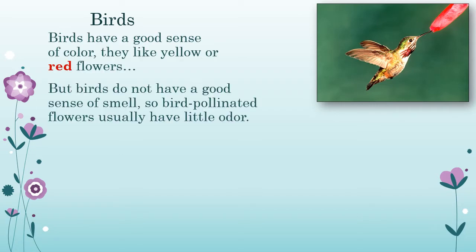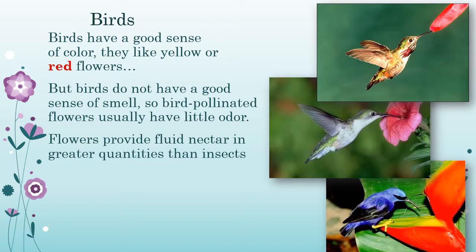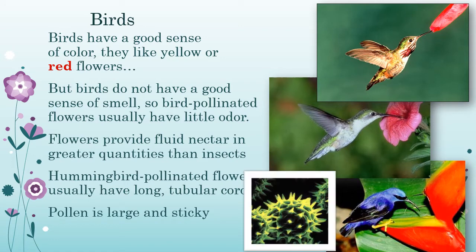Bird pollinators like hummingbirds and honeyeaters don't have a good sense of smell but love the color red, so the flowers tend not to have an odor but do tend to be red with lots of nectar. You often get trumpet-shaped flowers or little tubes where they stick their long beak in and their long tongue laps up the nectar — usually long fused petals forming a tubular corolla. The pollen is large and sticky, with little spikes visible in scanning electron micrographs, so it sticks to the bird's face and transfers to the next flower's stigma.